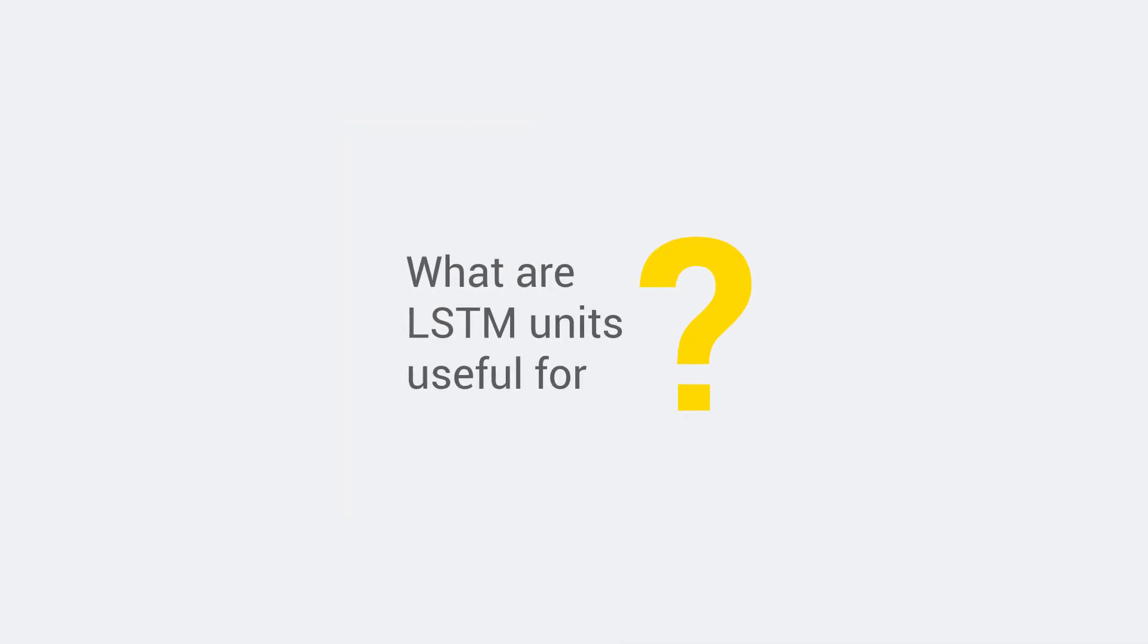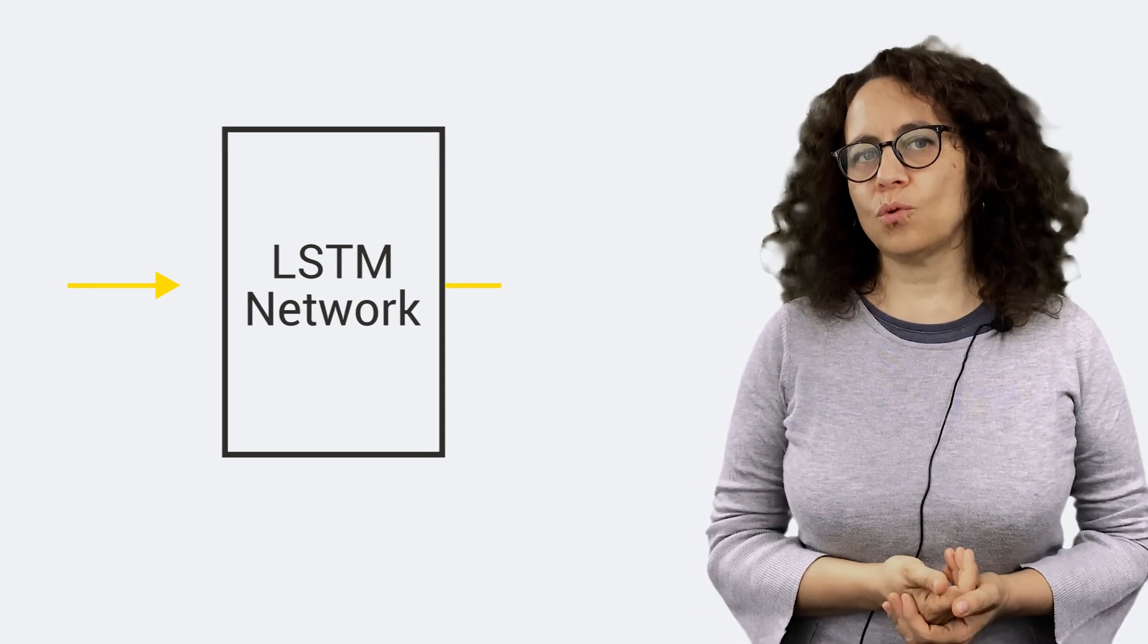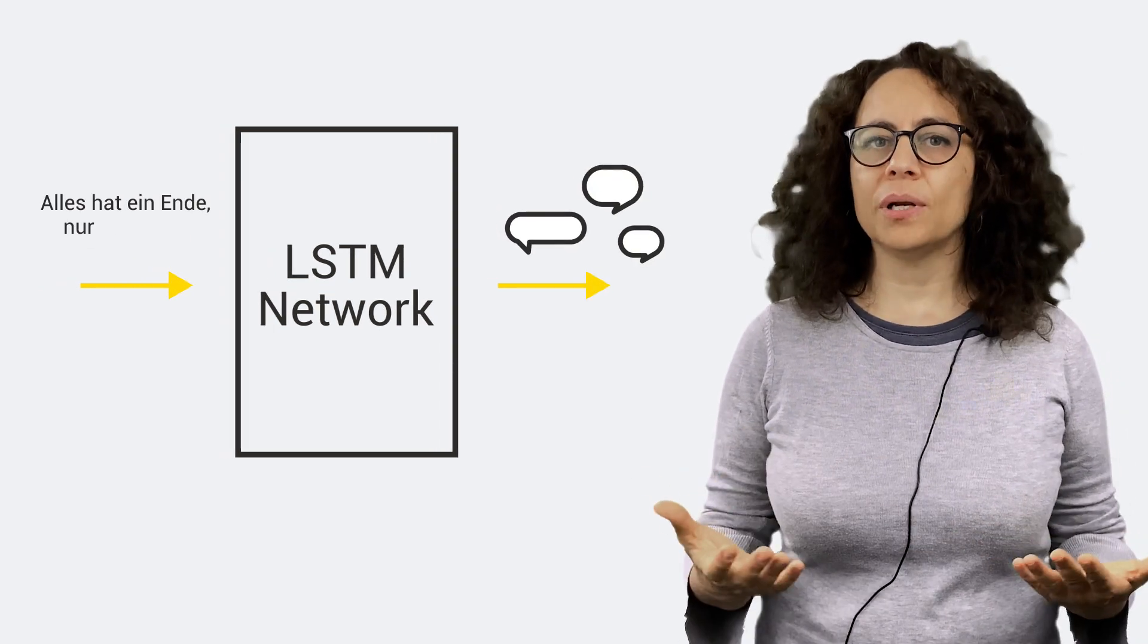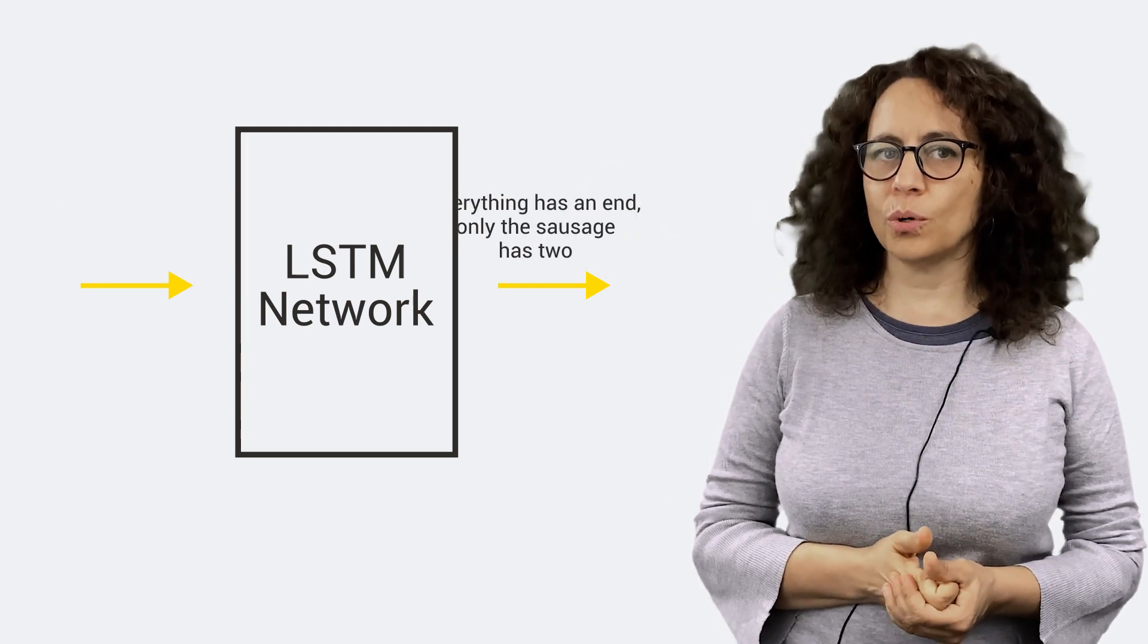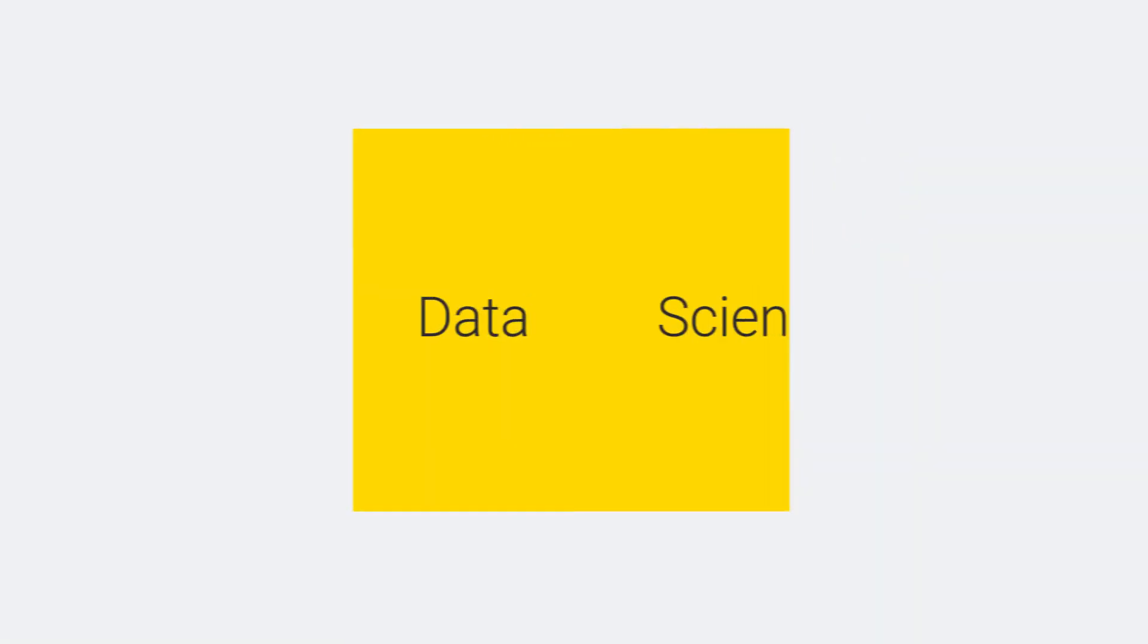What are LSTM units useful for? LSTM units are suitable for analyzing sequential data because they are able to process information from the past. They are used in all tasks requiring memory from the past, like time series analysis. A field where LSTM units are frequently used is natural language processing. For example, in automated machine translation, where the context is important to build the sentence in the target language.